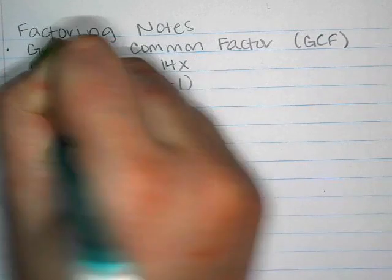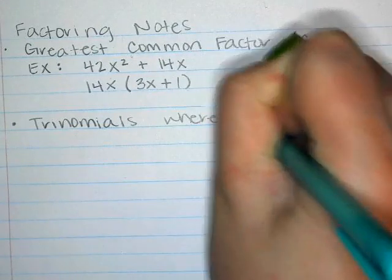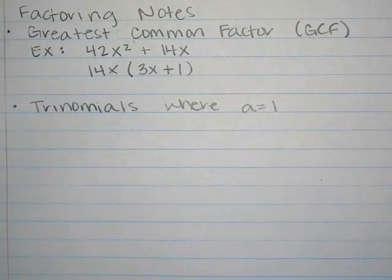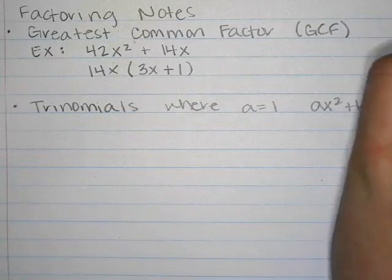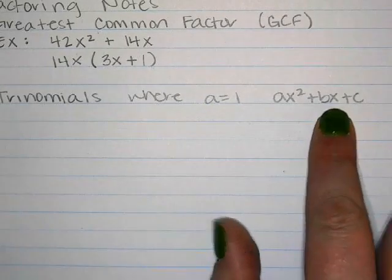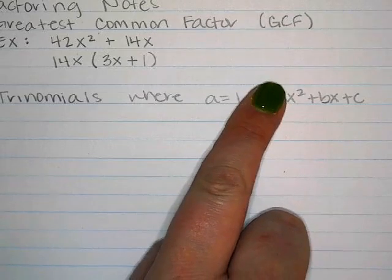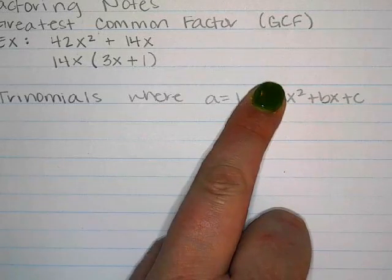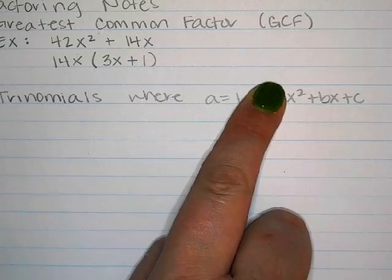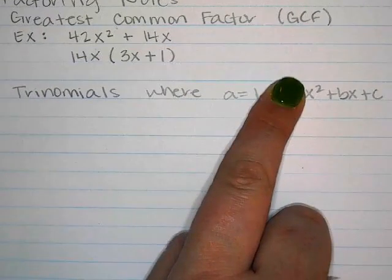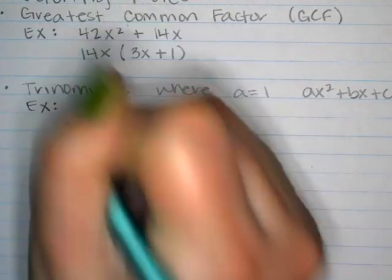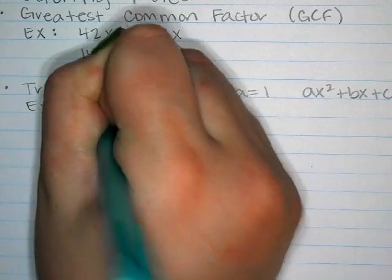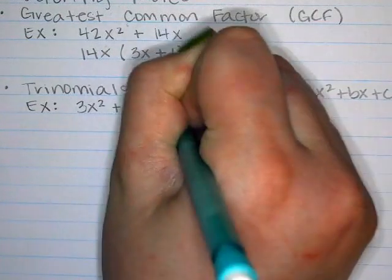The next type is trinomials. These are probably the ones you remember the most. A trinomial where the a value equals one is the most standard — you just have x squared plus bx plus c. I'm going to give you a quadratic with a GCF in it to practice: 3x squared plus 27x plus 60.